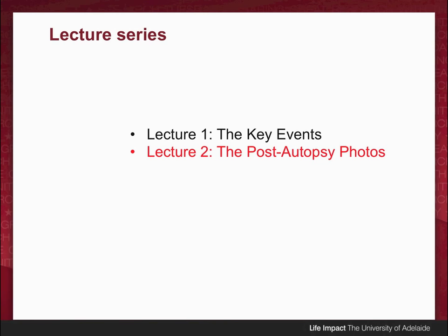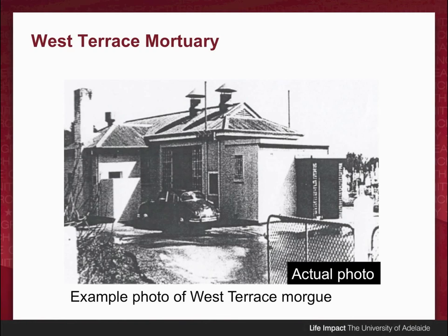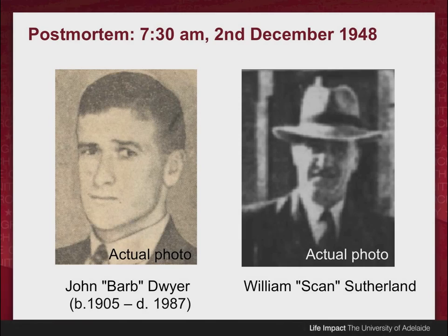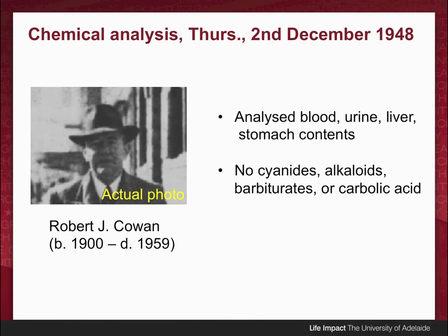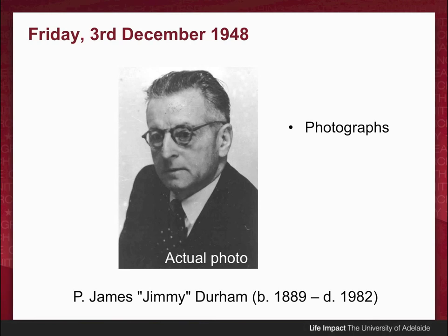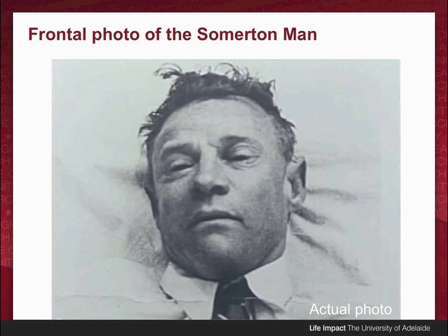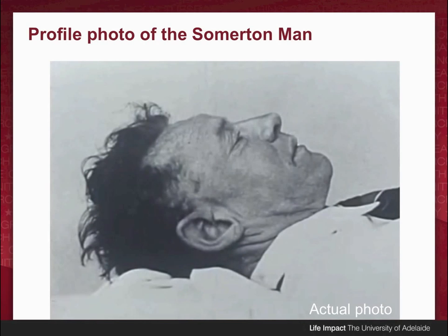Please see the first lecture first if you haven't seen it already. The body in 1948 was taken to the West Terrace Mortuary where Dr. Dwyer, in the presence of Scan Sutherland, performed the autopsy on the 2nd of December. Organs of the body were sent off to Robert Cowan to do chemical analysis, which came up negative on all counts. The following day, on the 3rd of December, Jimmy Durham took photographs of the body. The key point is that the photos were taken after the autopsy. This is the frontal photo that Jimmy Durham took, and this is the side photo of the unidentified Somerton Man. The question is: what can we learn from these photos?